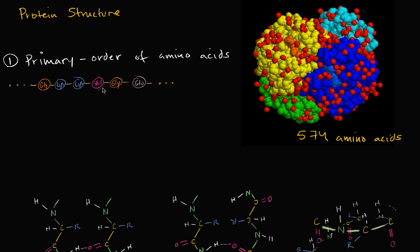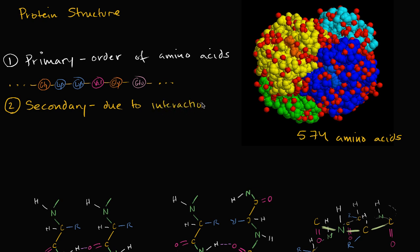Now the next level of structure — the primary structure is just the order, this is how we form our polypeptide — but how does a polypeptide start getting bent into these shapes to be able to do the different things that it needs to do? Well, the secondary structure is due to interactions of the peptide backbone.